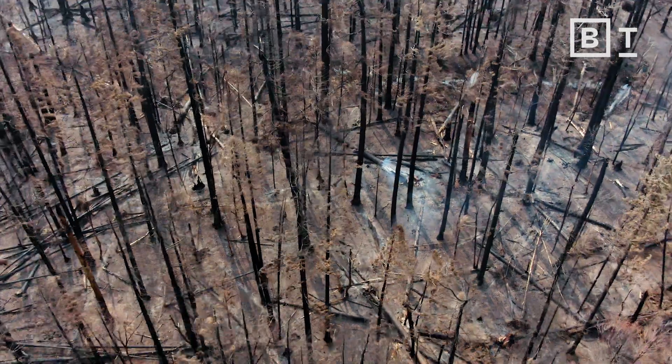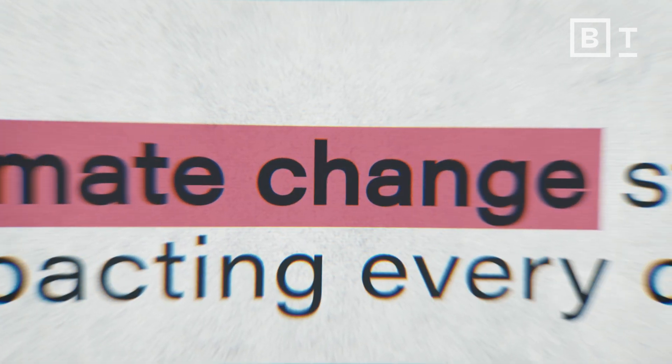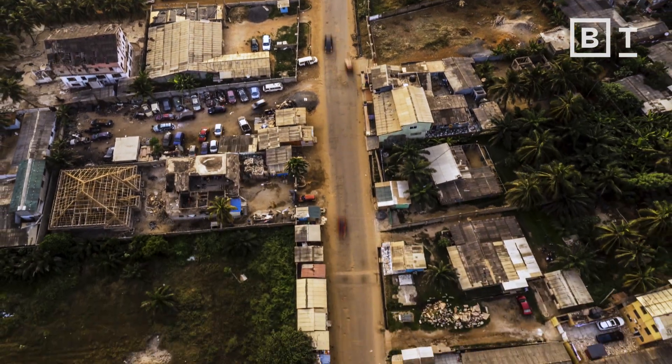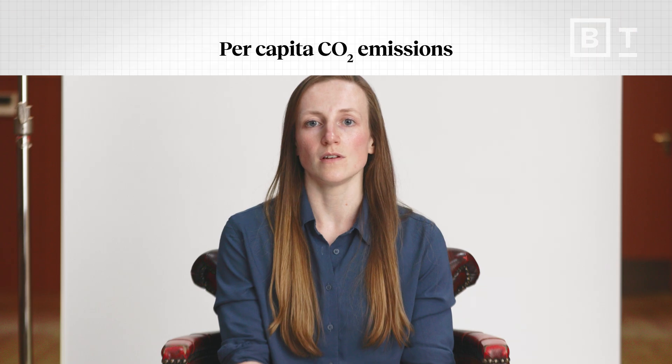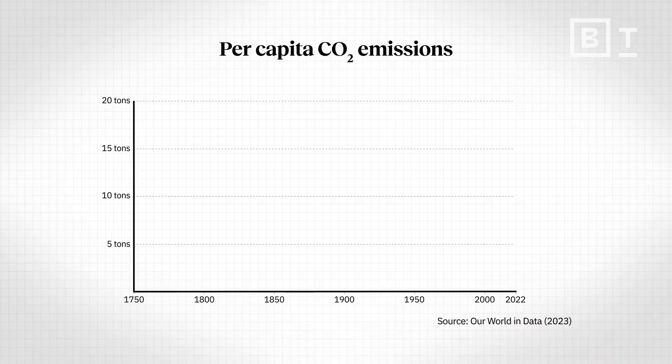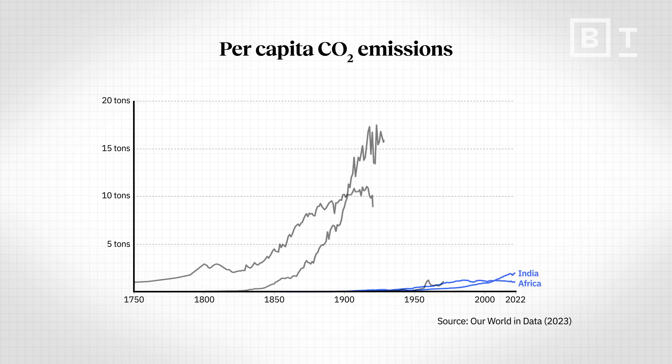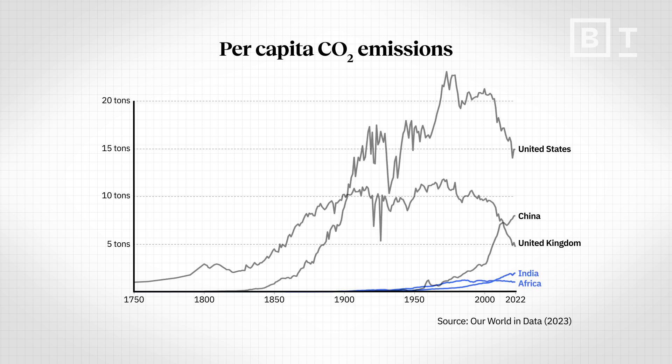A key argument people often make about climate change is that there are just far too many people, pointing to countries where fertility rates are still very high — for example, some countries across Africa where the average number of children per woman is four or five. What's really key to highlight is that in these countries with very high fertility rates, incomes are low and per capita CO2 emissions are also extremely low. When you do the maths, you could actually add billions of people at those very low income levels and it would have almost no impact on global CO2 emissions.